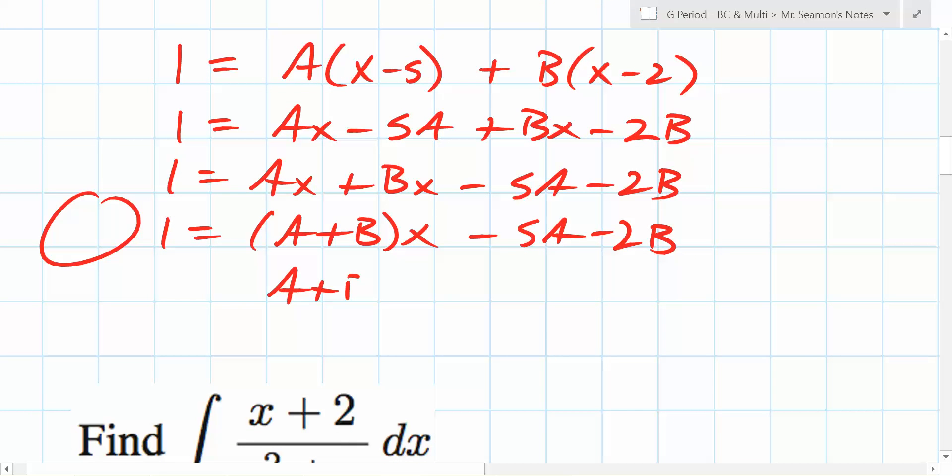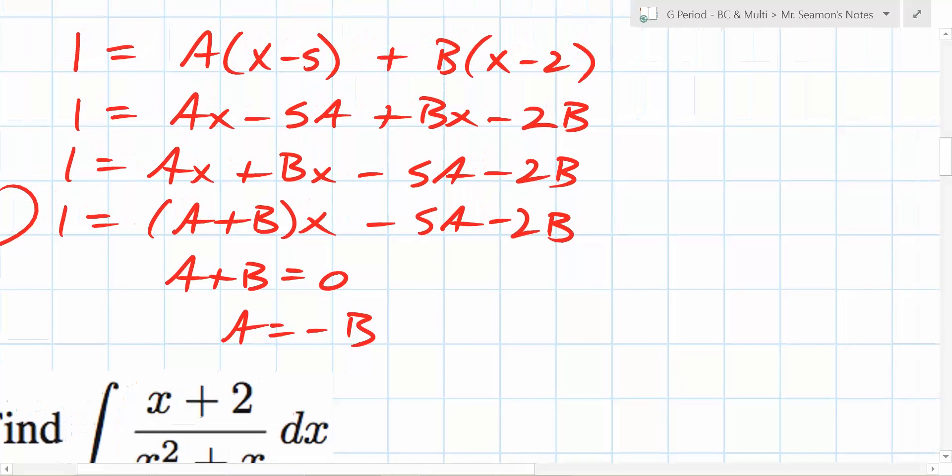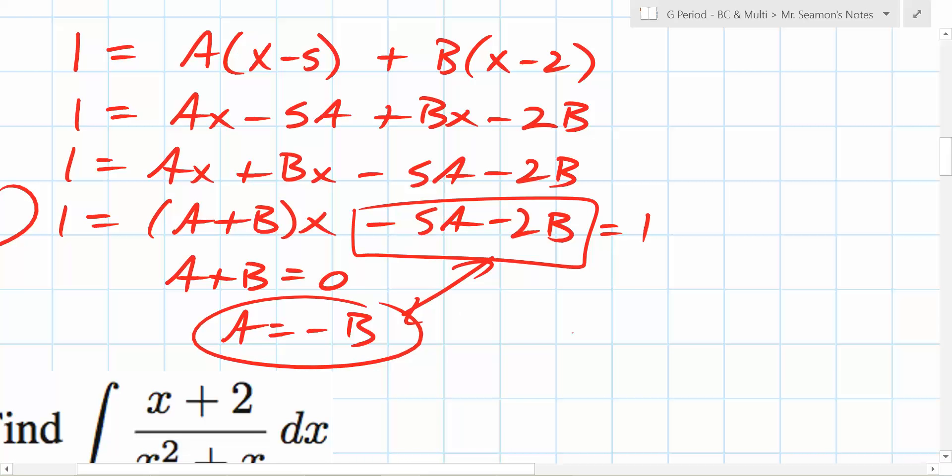Are there any x's over here? So what do you know A plus B must be? Zero. So therefore A is negative B. That's your first thing you know. But then what does this must equal? One. So you have two equations. A is negative one third and B is one third.